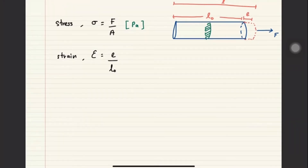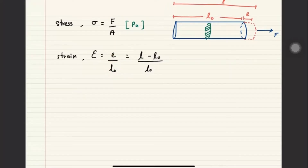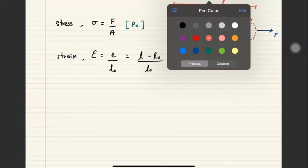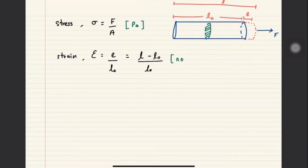We can rewrite: extension equals L minus L-naught. The extension has a unit of meter and L-naught also has a unit of meter, so the unit for strain — what do you expect? There is no unit. First of all it is a ratio, and then you have meter over meter which cancels out. So strain has no unit, which is different from stress. As long as the unit for L is the same, it should be okay.